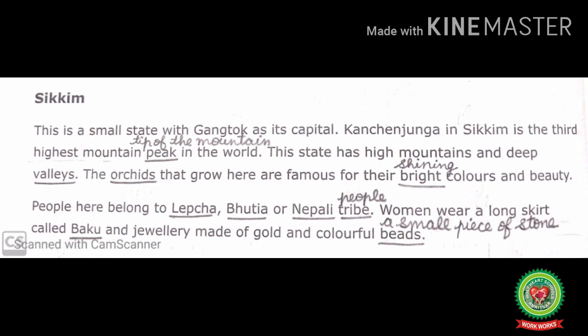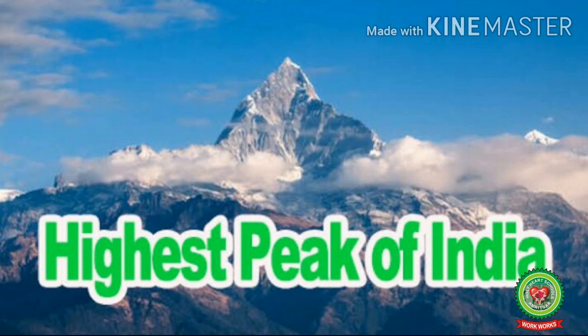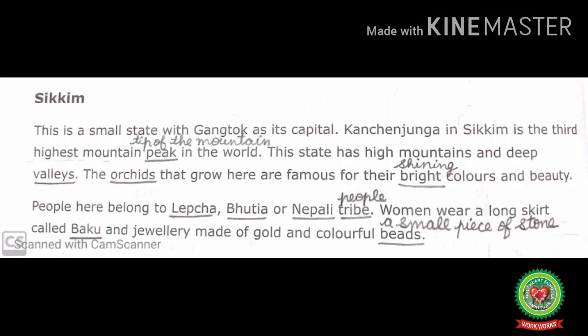Next topic is Sikkim. This is a small state with Gangtok as its capital. Kanchenjunga in Sikkim is the third highest mountain peak in the world — peak means tip of the mountain. Kanchenjunga is important to India because it is the highest peak of India and the third highest mountain peak in the world. This state has high mountains and deep valleys.